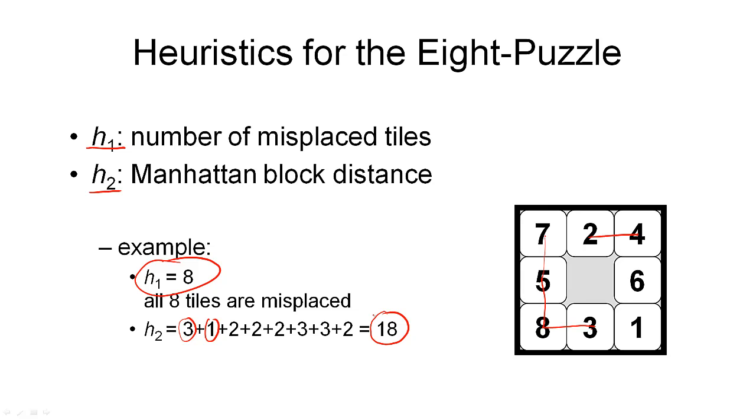If we continue like this for all 8 tiles, we will see that the Manhattan block distance heuristic for this state is 18. It is easy enough to see that both of these heuristics never overestimate the distance to the nearest goal. It should also be easy to see that the second heuristic h2 always gives us a much more accurate estimate of how far the goal node is away. But it is not a perfect heuristic. The actual distance to the goal node from the state shown here is 26.